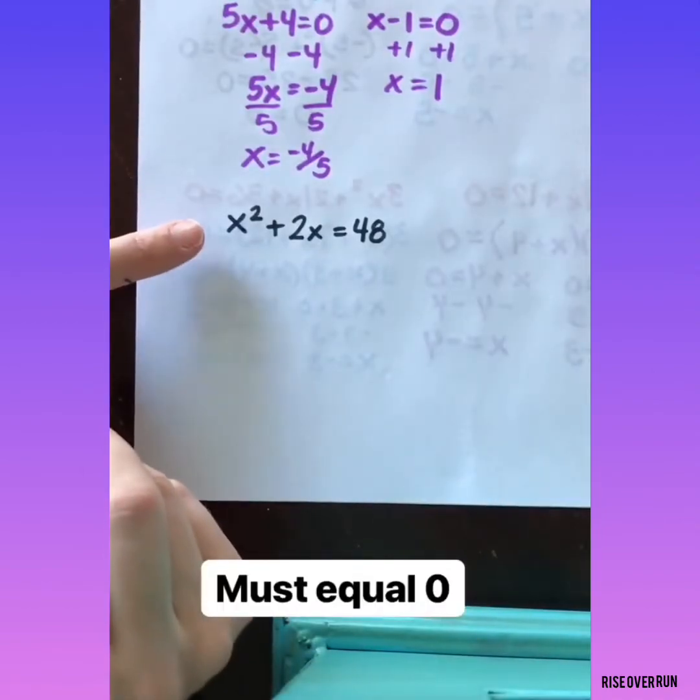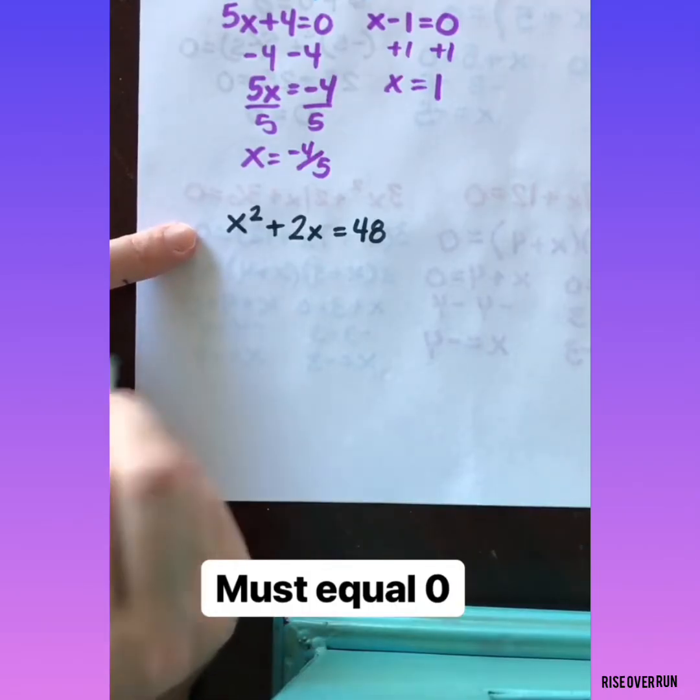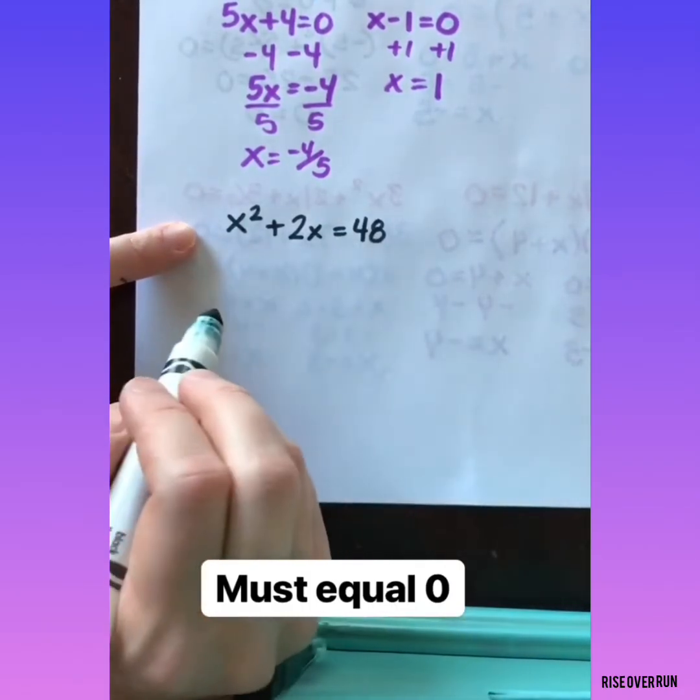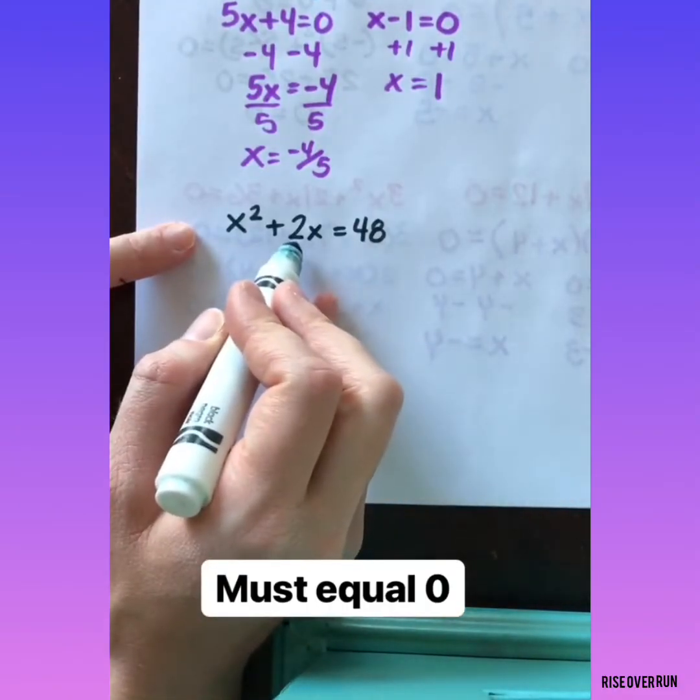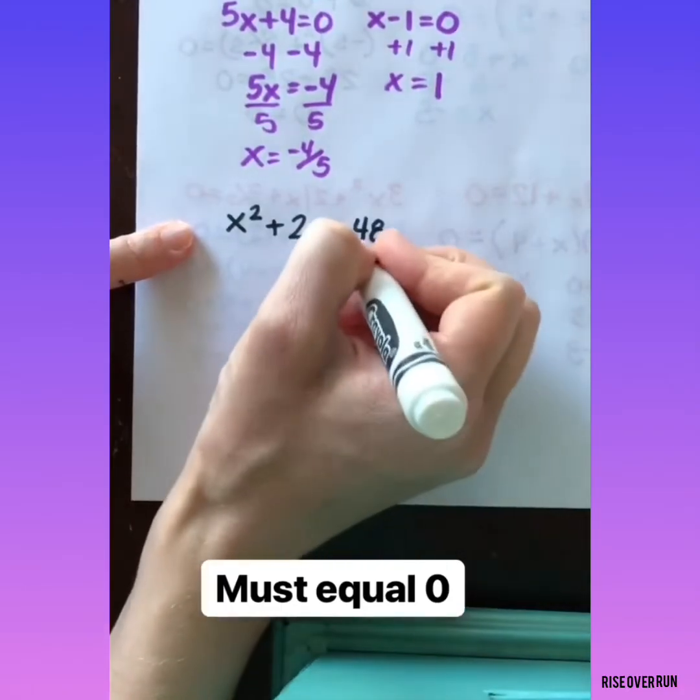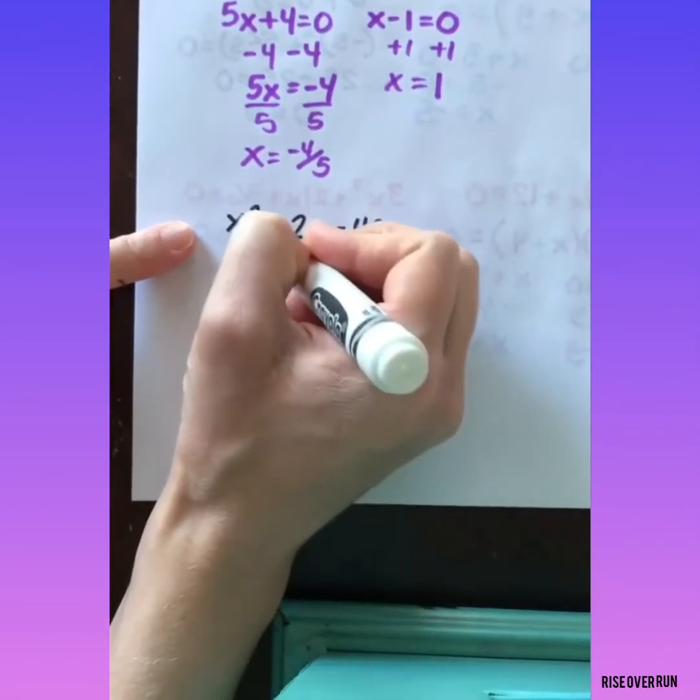If we're using factoring to solve a quadratic, we have to use the 0 product property. So what do we do when it doesn't equal 0? Well, we need to move that over to the left side and make it equal 0. So let's subtract 48 from both sides.